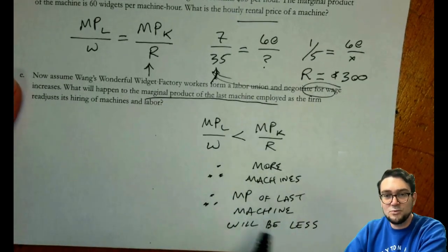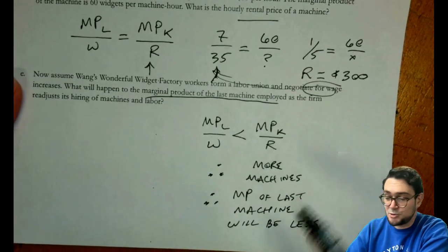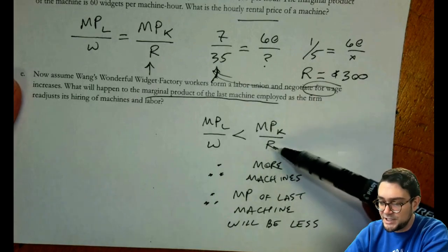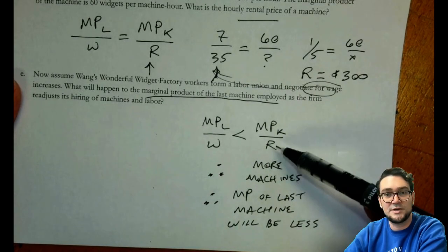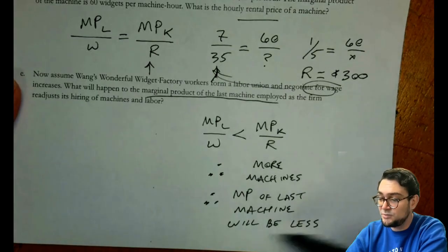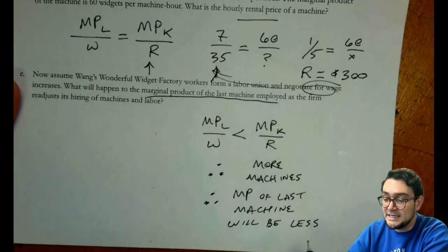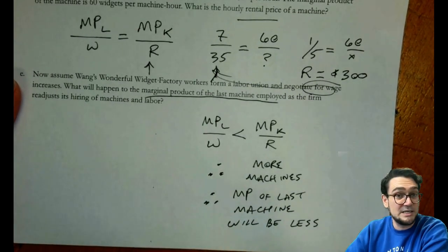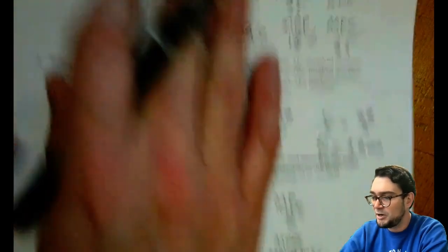And so therefore the MP of the last machine will be less. And one reason why we know that to be true is because of diminishing marginal returns, right? We're going to hire the next machine. Well, the next machine is going to produce less marginal product than the last one that we just did. So we would say that the last machine will generate less marginal product. It's not that actually that machine is less productive. It's just as a result of diminishing marginal returns.